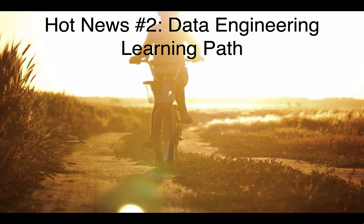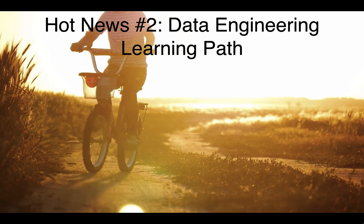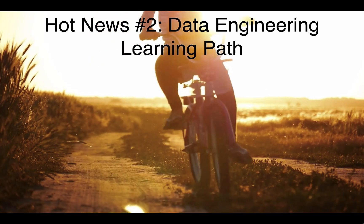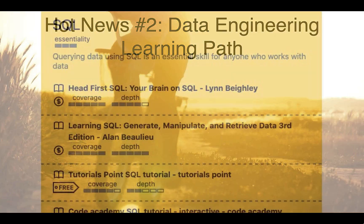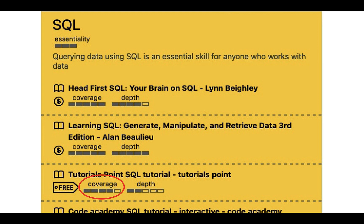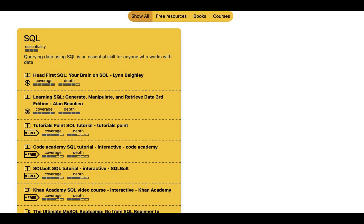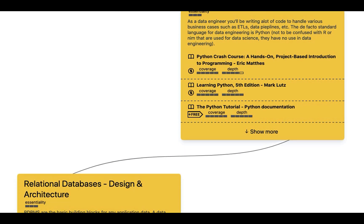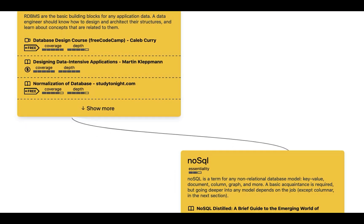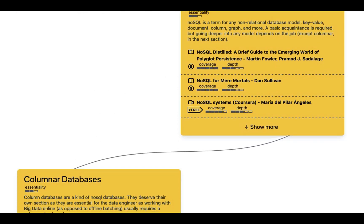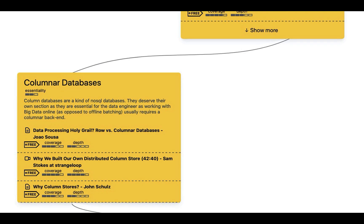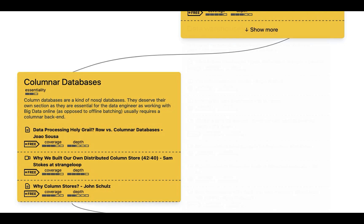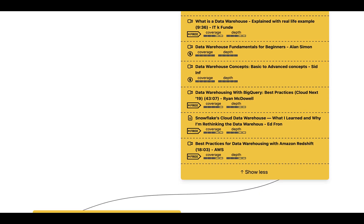Developer David Snare has created a useful online learning path and resource list for data engineering that covers books, courses, and articles. For each category, the learning path lists the level of coverage and depth for each resource, as well as a cost indicator. The learning path covers common languages and database tools used in data engineering, such as SQL, Python, RDBMS, MongoDB, Redis, and more, with brief commentary on which tools are appropriate for a particular purpose.